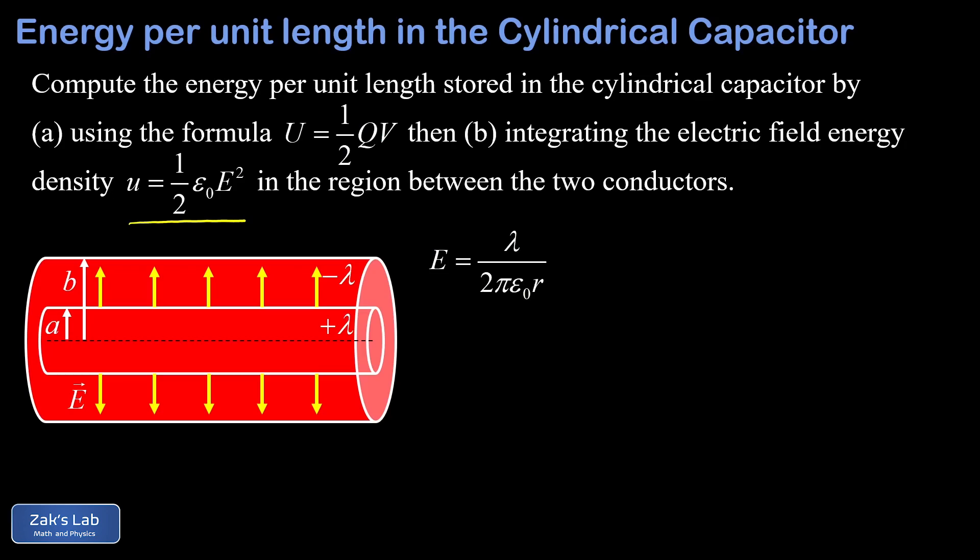What we're going to do here is integrate this energy density over the region between the two conductors to get a total energy per unit length that should come out the same as our first result. So all we have to do is take our electric field magnitude, that's lambda over 2 pi epsilon 0 r, and sub it into the energy density formula. What I notice here is that the energy density is a function of r. In other words, it's changing with distance from the symmetry axis, dropping off and getting weaker as we get farther from the center.